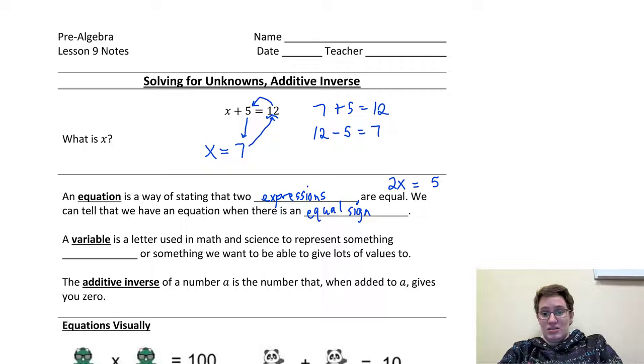A variable is a letter used in math and science to represent something unknown. Or something we want to be able to give lots of values to. So, most commonly, initially, when we're doing Pre-Algebra and Algebra, is that we're trying to find something that we don't know, but whoever made the problem knew. And so, then, we can find what is unknown to us by using algebra rules.